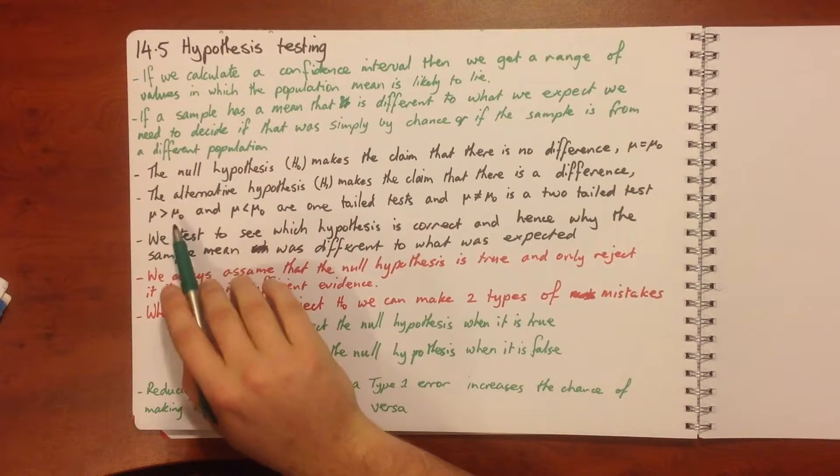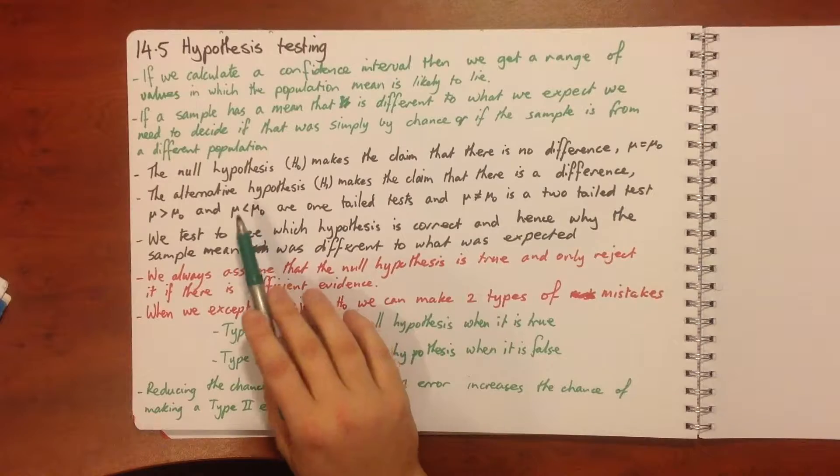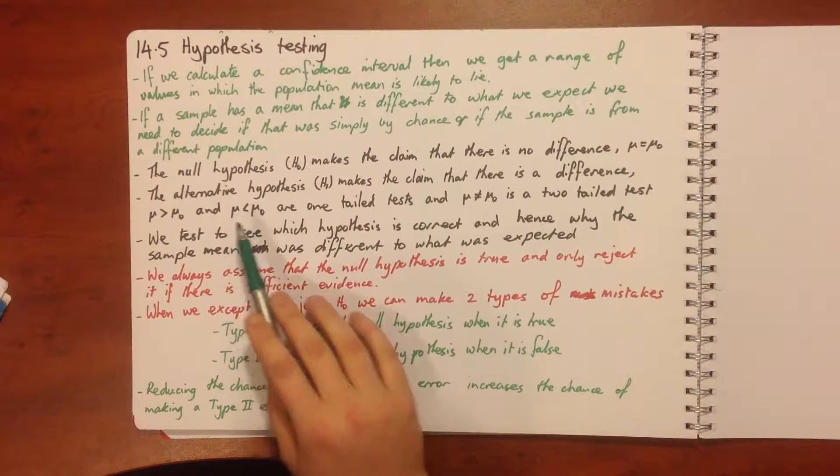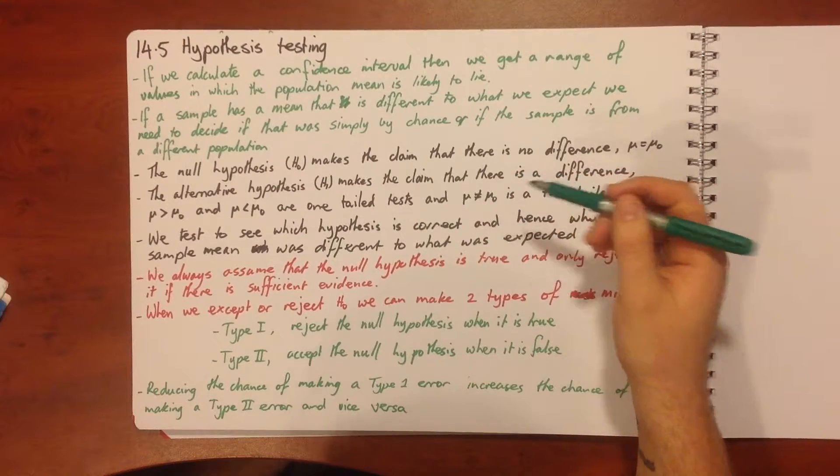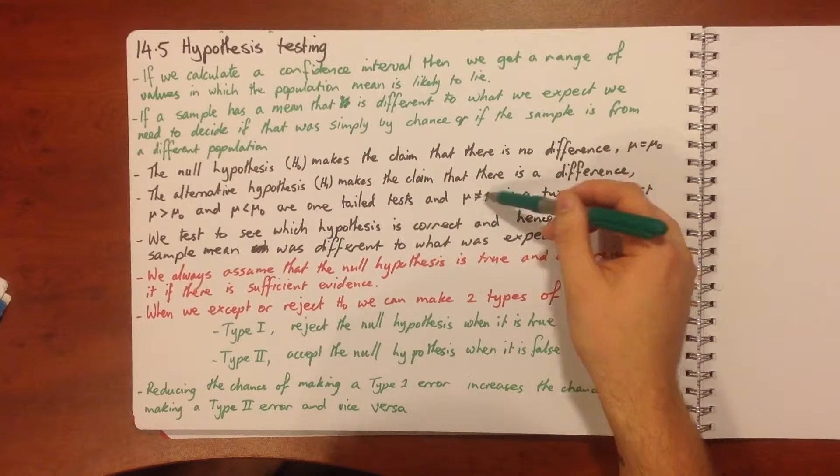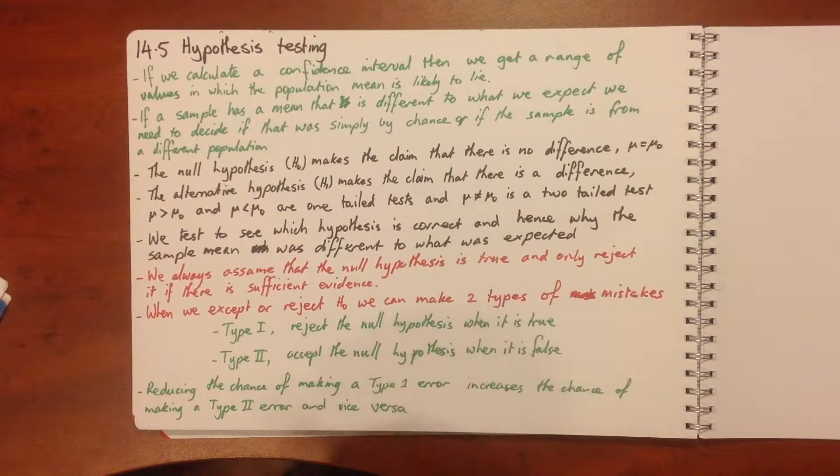Our sample mean is less than actual mean or our sample mean is greater than the actual mean. We say that they are one-tailed tests. If we say that our mean that we found is not equal to the mean, we say that's a two-tailed test.